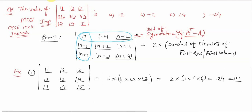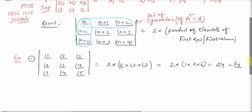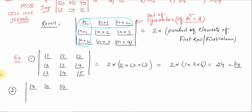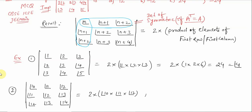Similarly, using the second result: if we have the determinant with entries 10!, 11!, 12!; 11!, 12!, 13!; 12!, 13!, 14!, then the value is 2 times the product of elements of the first row or first column, which is 10! × 11! × 12! — and that is the answer.